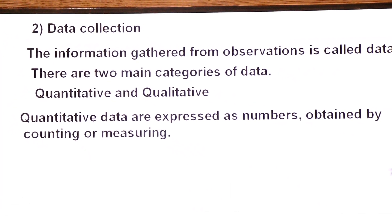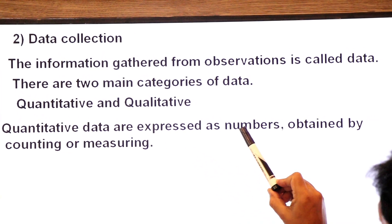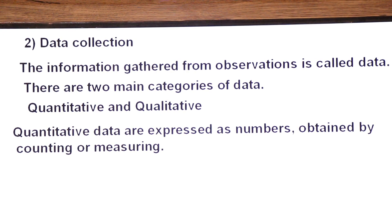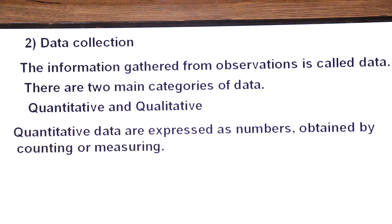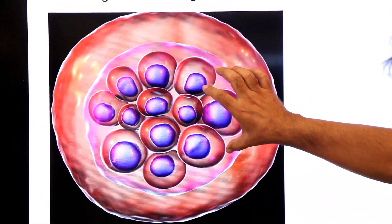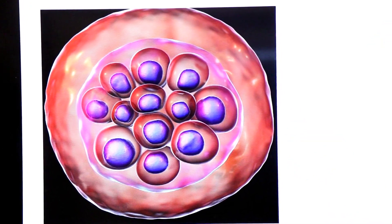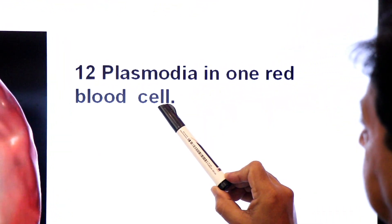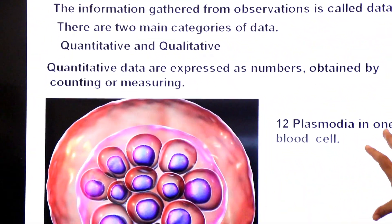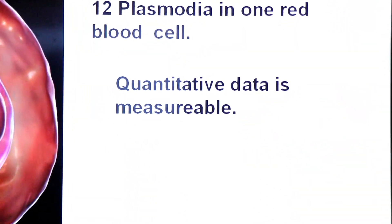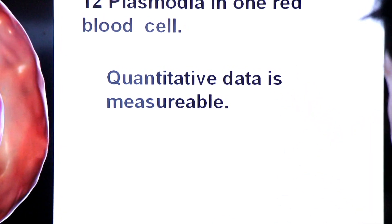Quantitative data are expressed in numbers obtained by counting or measuring. For example, here you see a red blood cell infected with plasmodium, and you can count 12 plasmodia in one red blood cell — this is quantitative data because it is expressed in numbers. Quantitative data is measurable; for example, length and mass are measurable.